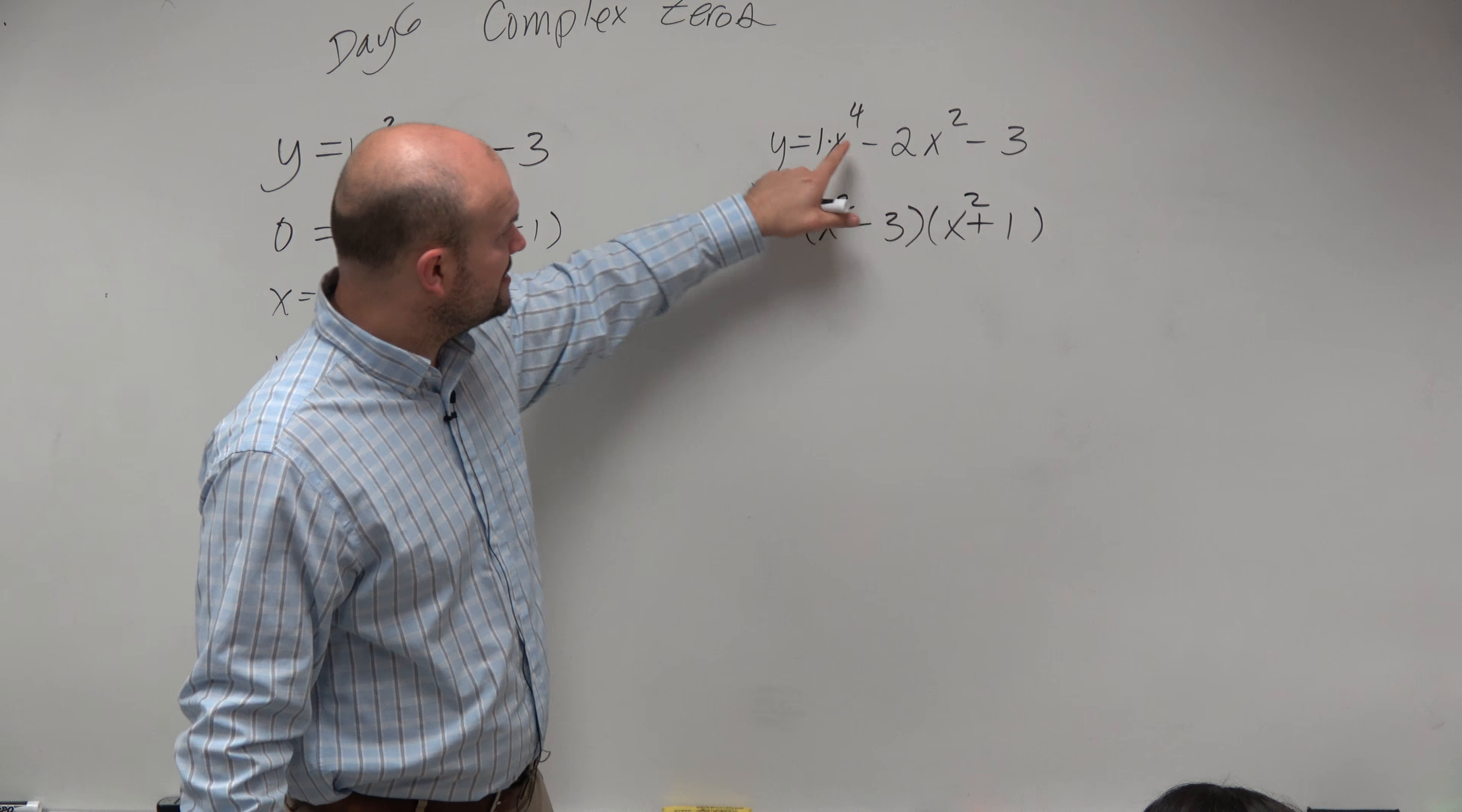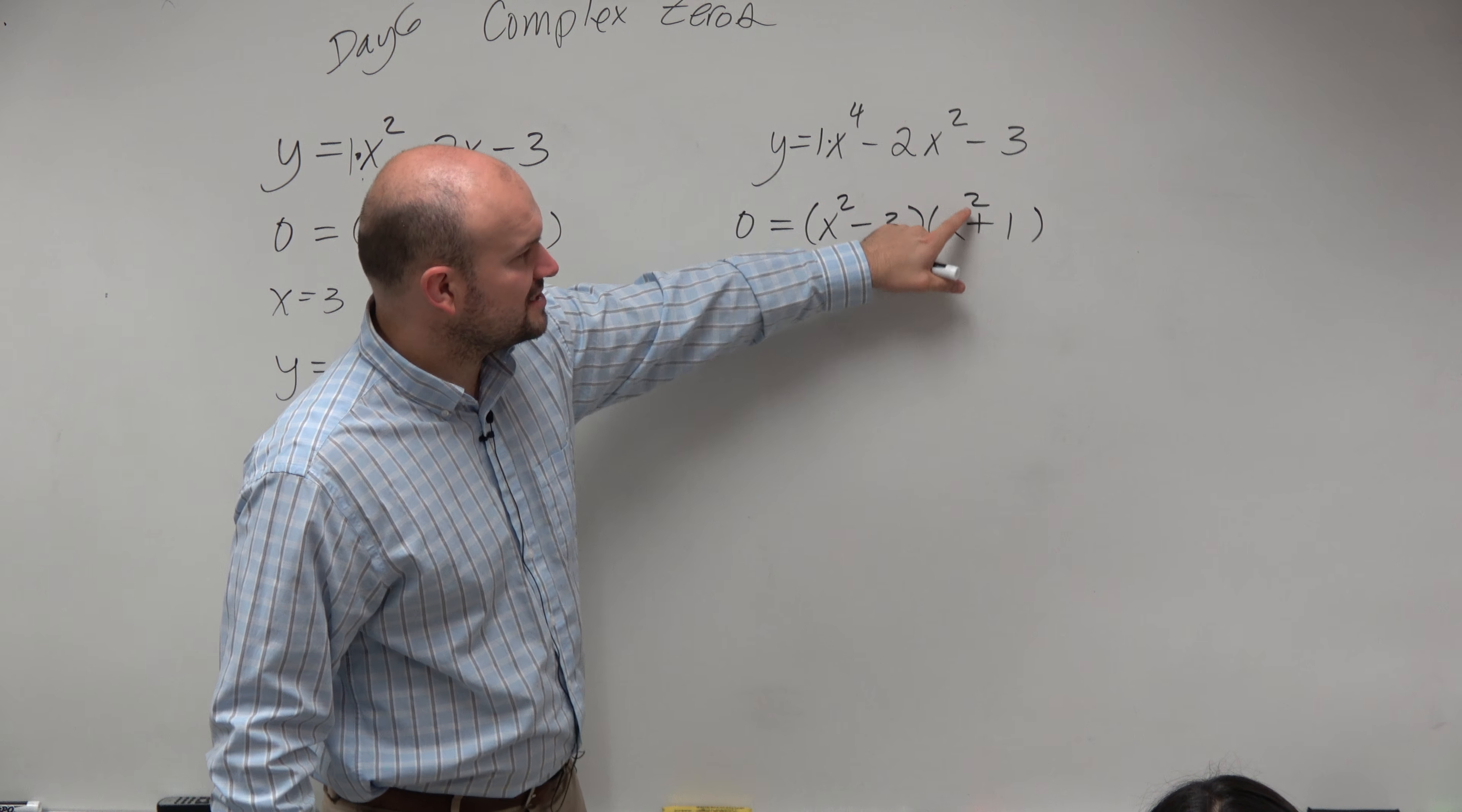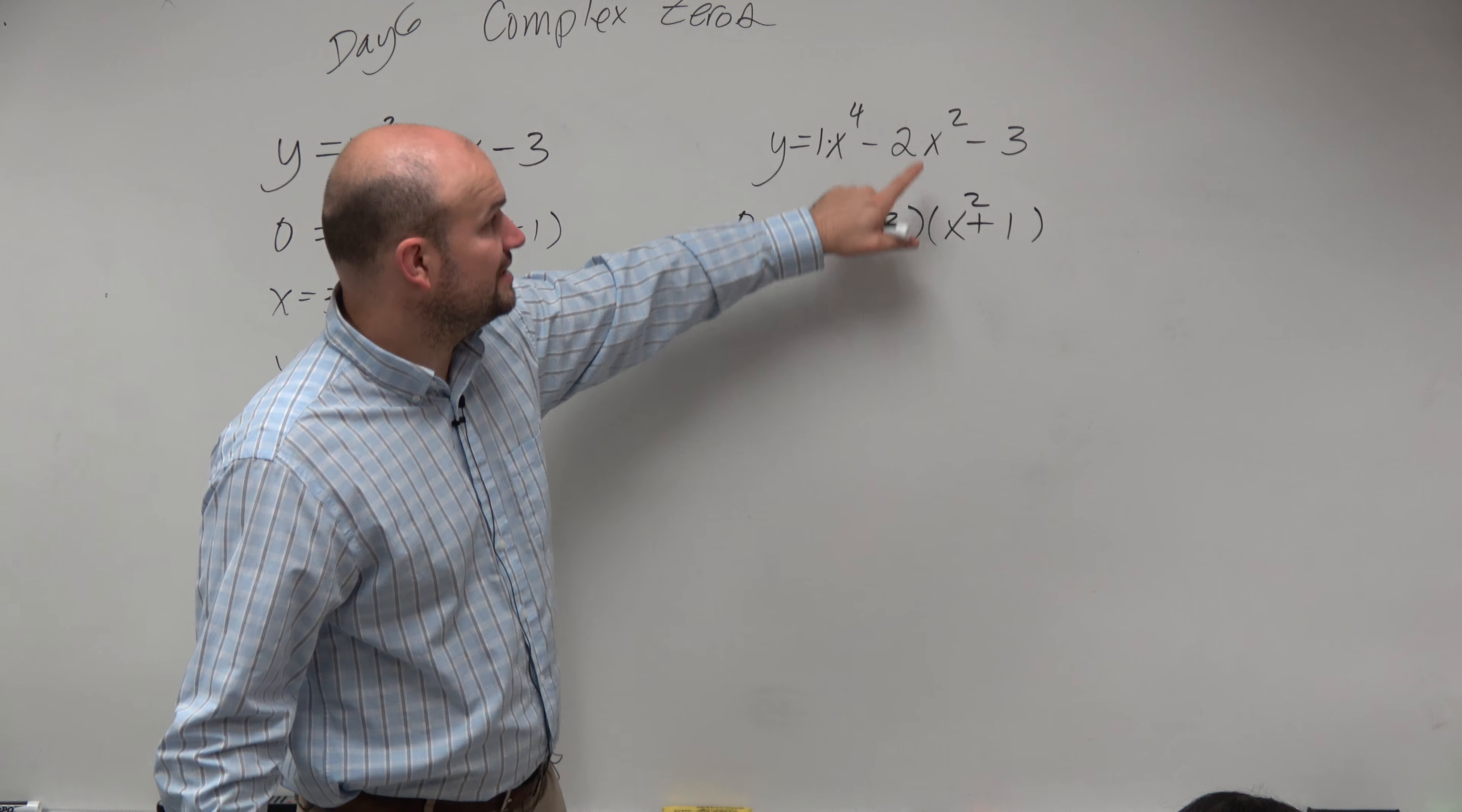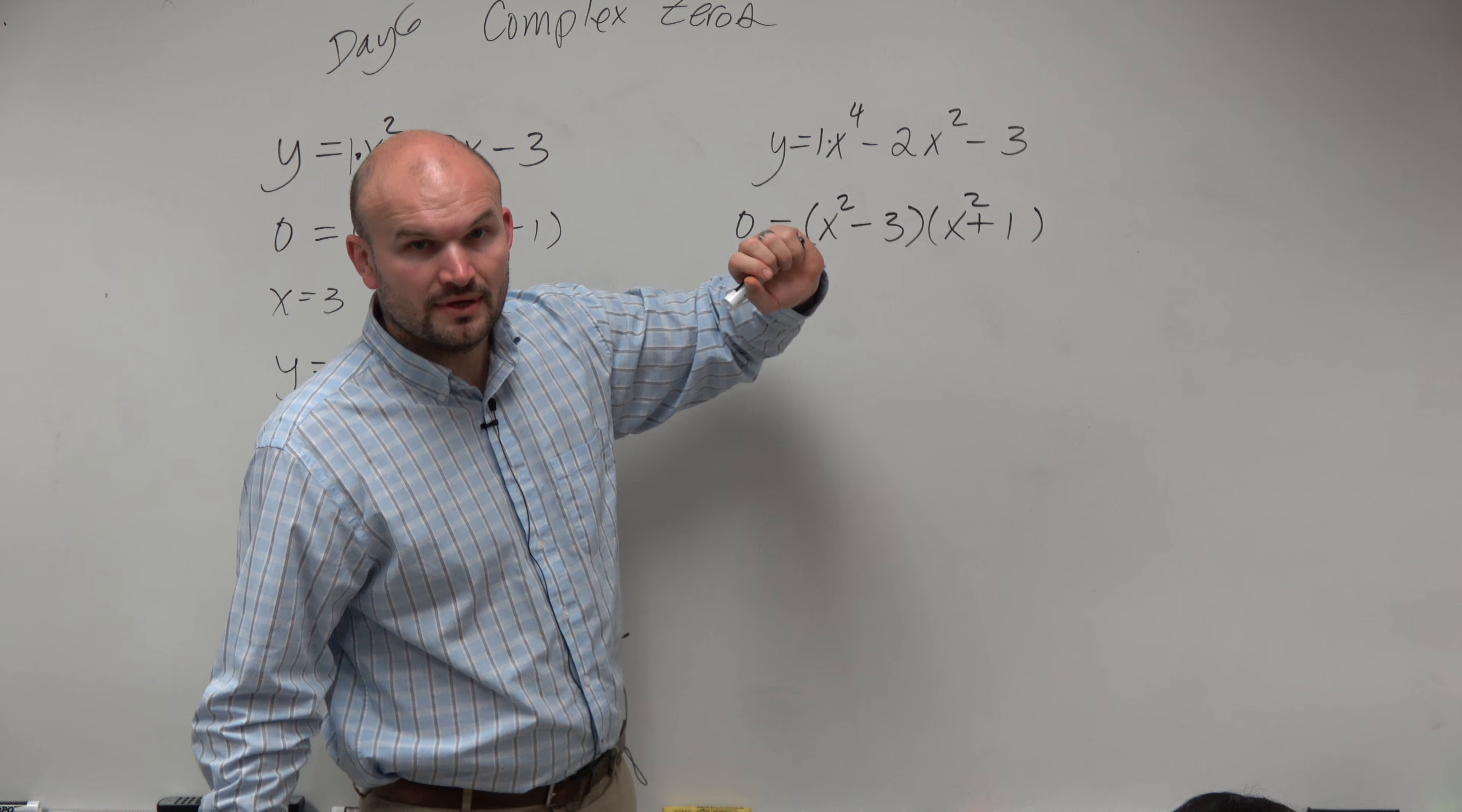x squared times x squared is x to the fourth. x squared times 1 is x squared. Negative 3x times x squared is negative 3x squared. Negative 3x squared plus 1x squared is negative 2x squared. Negative 3 times 1 is negative 3, OK? Now, again,